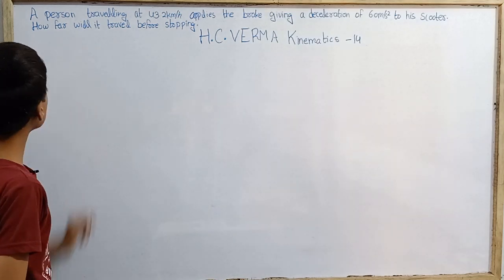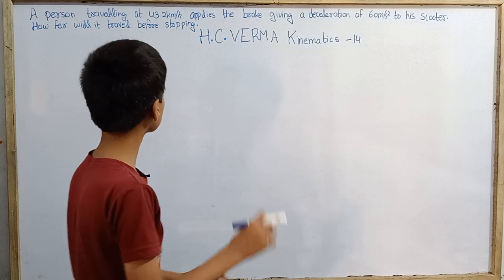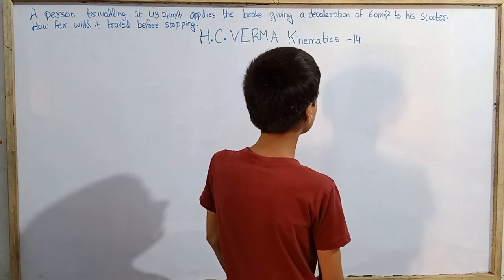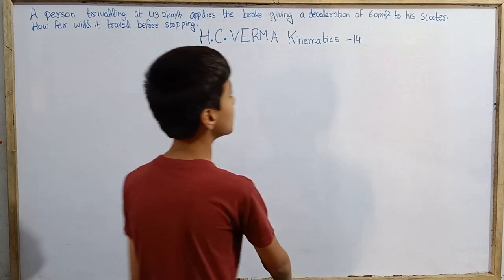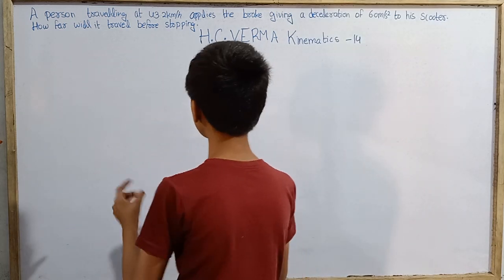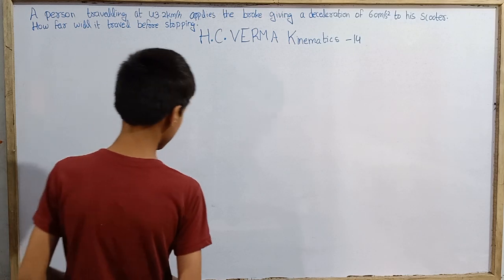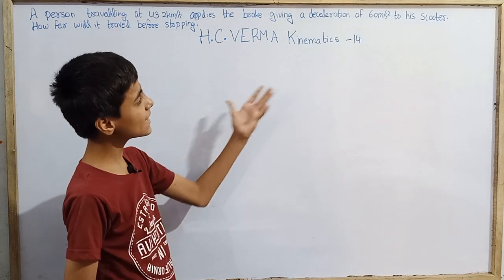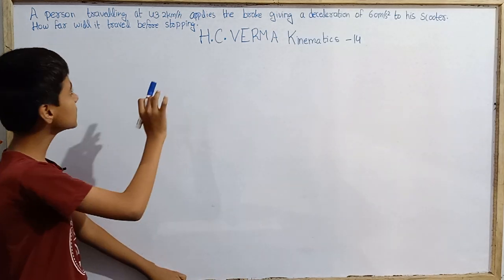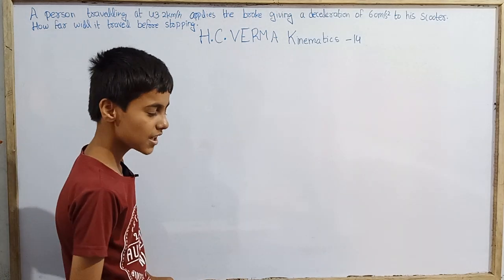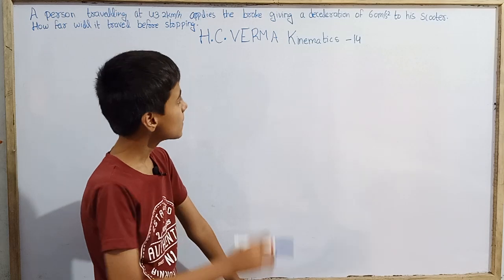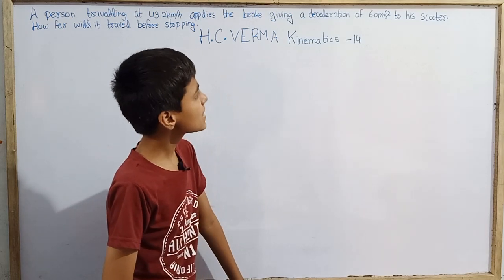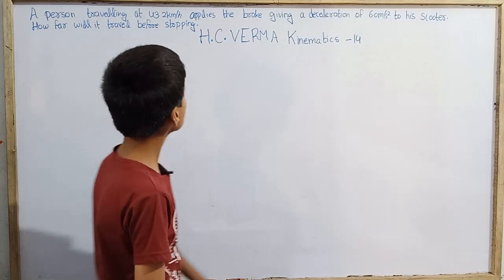The question states: a person traveling at 43.2 km per hour applies the brake, giving a deceleration of 6.0 m per second square to his scooter. The scooter is traveling at 43.2 km per hour and then the brake gives a deceleration of 6.0 m per second square.